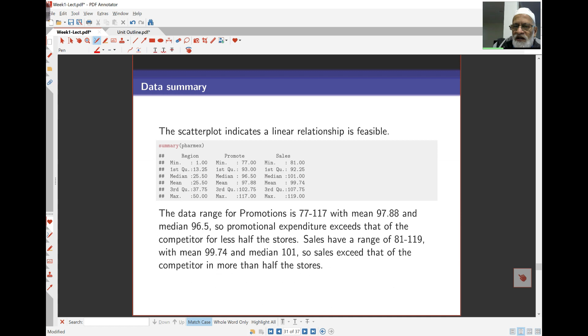Here's some summaries that I had done before here, and some description of the data here. The data shows me promotions is between 77% to 177% of that of the competitor. The main expense here on expenditure on promotions is 97% or 98% here. And the median is 96.5%. So, about a little bit less than half of the stores use the same as my competitor or more. Well, sales actually have a range of 81% to 119%. The median sale is 101%. So, half our stores have more than the sales of our competitor.